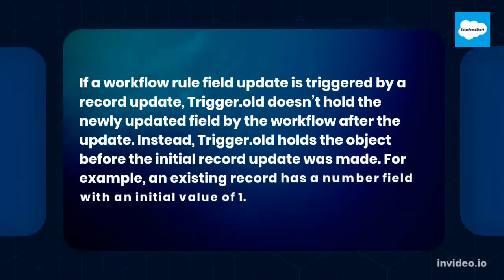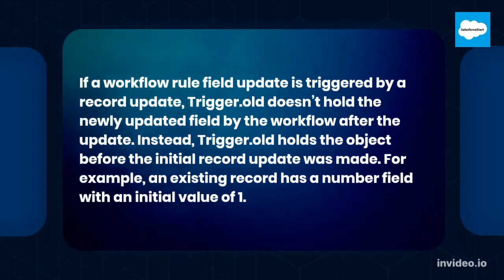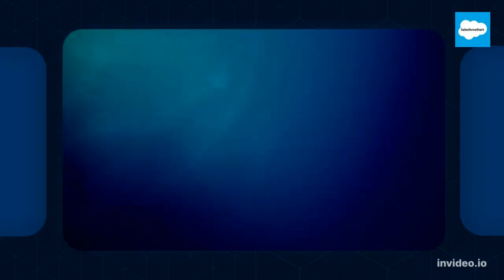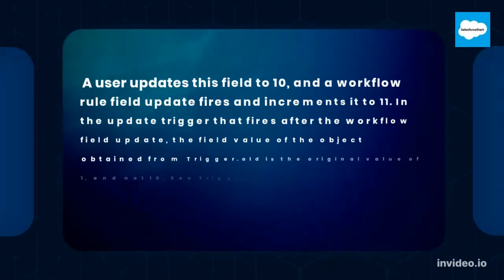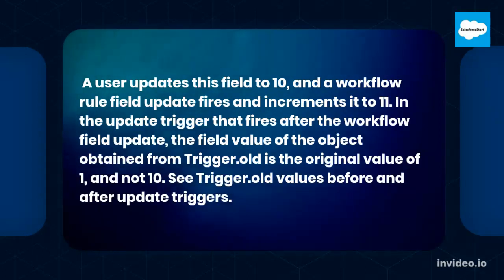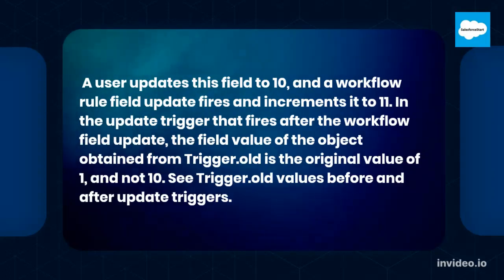Additional considerations: If a workflow rule field update is triggered by a record update, trigger.old doesn't hold the newly updated field value set by the workflow after the update. Instead, trigger.old holds the object before the initial record update was made. For example, an existing record has a number field with an initial value of 1. A user updates this field to 10, and a workflow rule field update fires and increments it to 11. In the update trigger that fires after the workflow field update, the field value obtained from trigger.old is the original value of 1, and not 10.